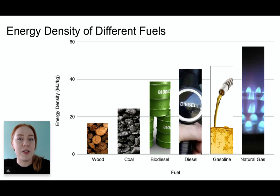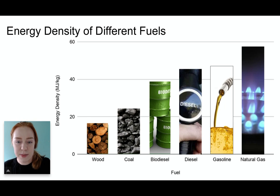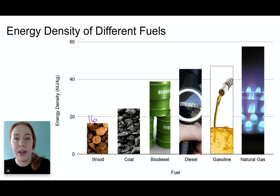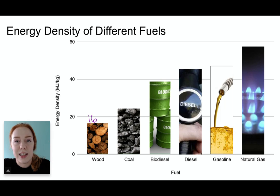Now let's start by looking at some of the most common fuels that we might encounter in our daily lives. Let's start out with wood — this is at the lowest end of the spectrum, and it only has about 16 megajoules of energy per kilogram of fuel. This is the kind of thing you put into a wood-burning stove or a campfire.